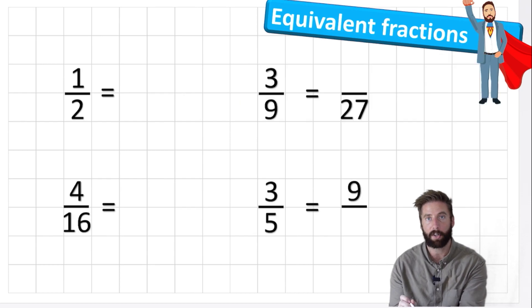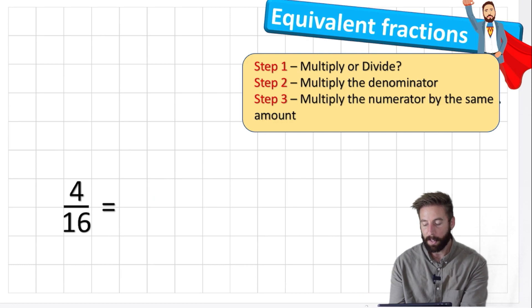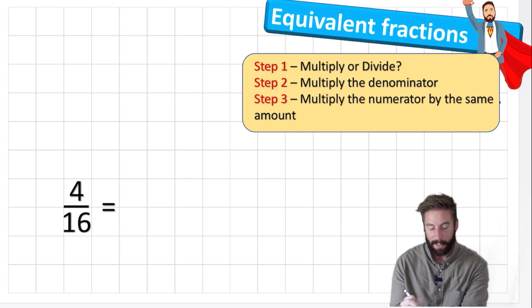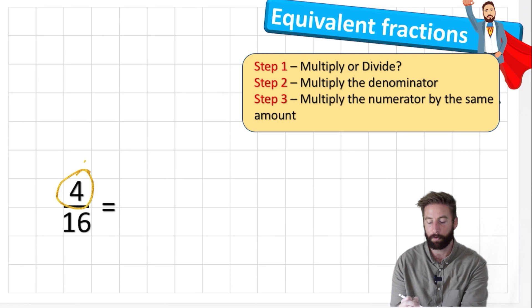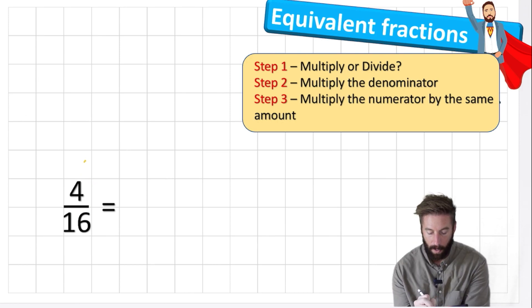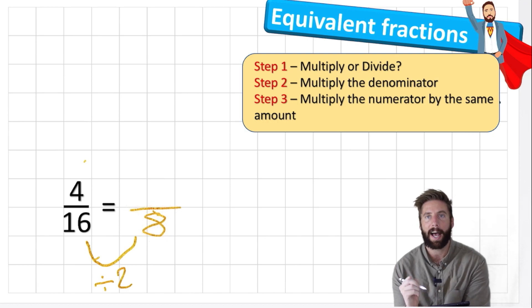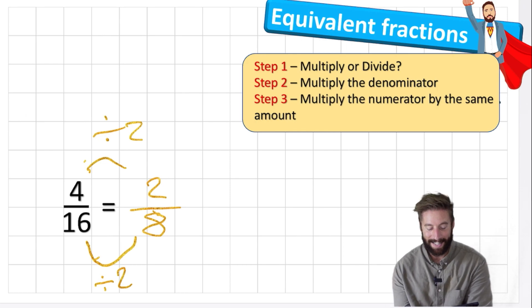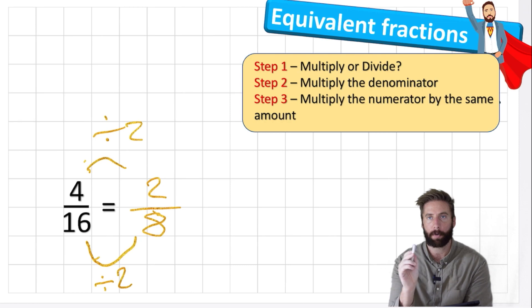Let's pick a harder question — four sixteenths. Same steps: I choose whether to multiply or divide, then apply it to the denominator, then the numerator. In this case I can divide, because four can be divided by two. Starting with the denominator: sixteen divided by two is eight. Whatever I do to the denominator I must do to the numerator, so four divided by two is two. Two eighths is the same as four sixteenths — the same value. Having four sixteenths of the chocolate bar is the same as having two eighths.